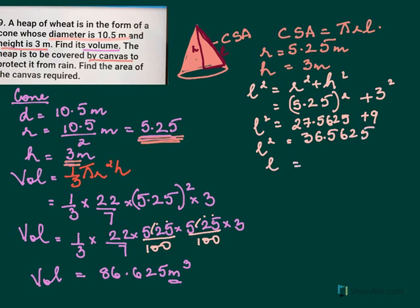And your L will be under root of 36.5625. Now if you remember in the 8th class you have learnt how to find the under root. If not, in regular classes I will explain to you to find the under root. And the under root of this is 6.05.